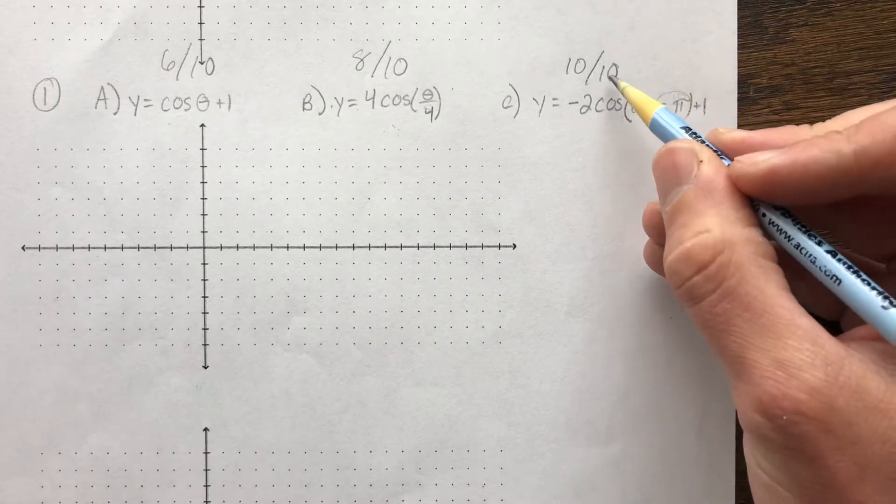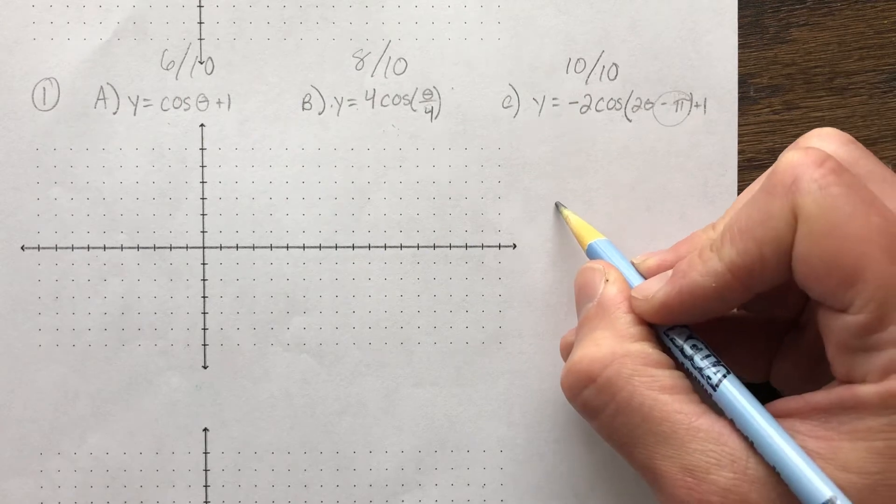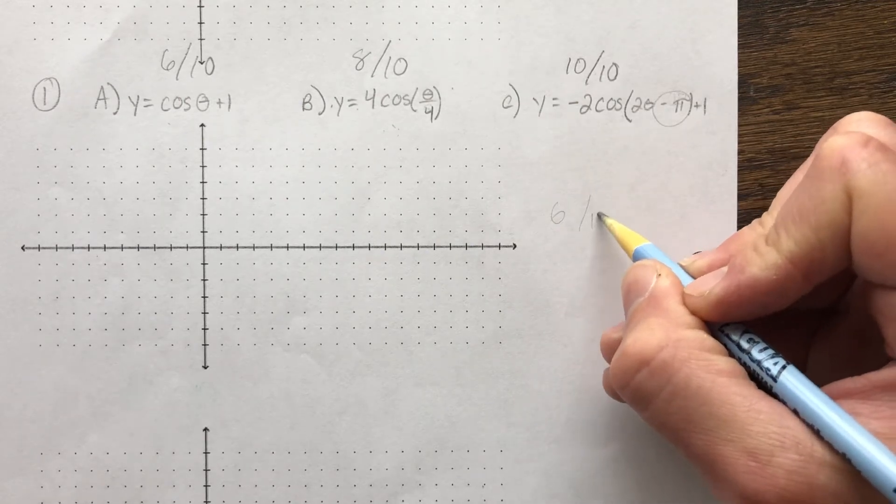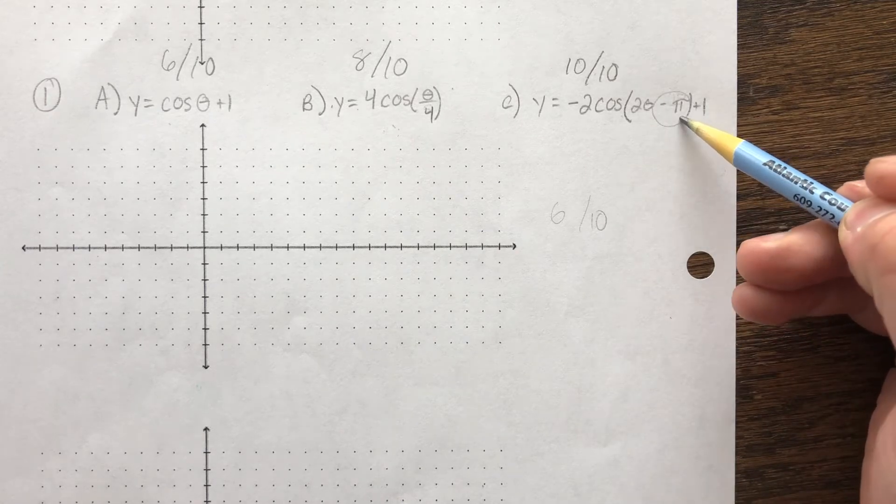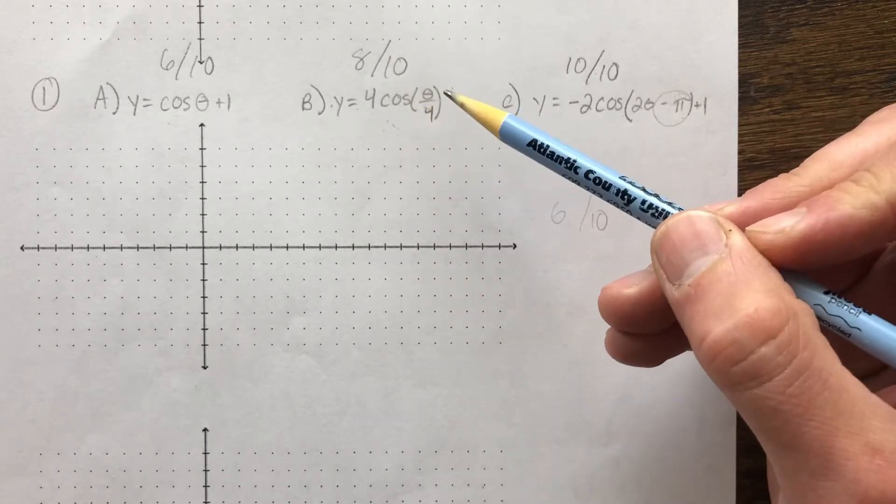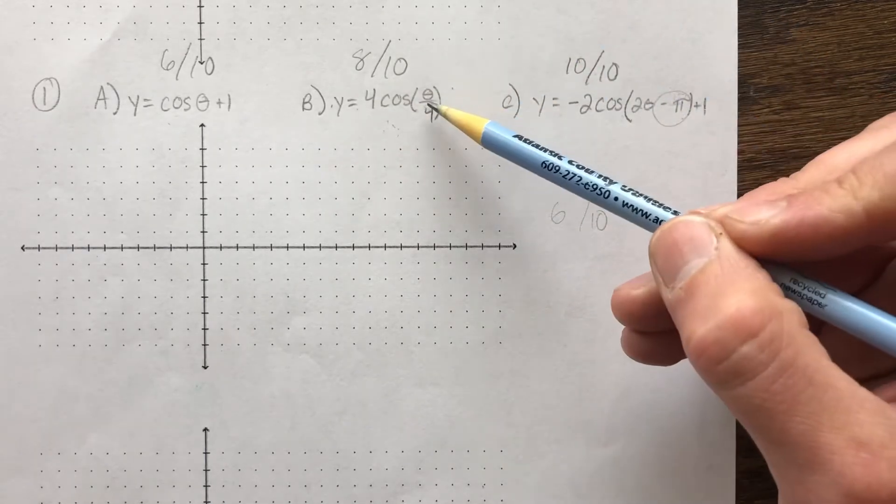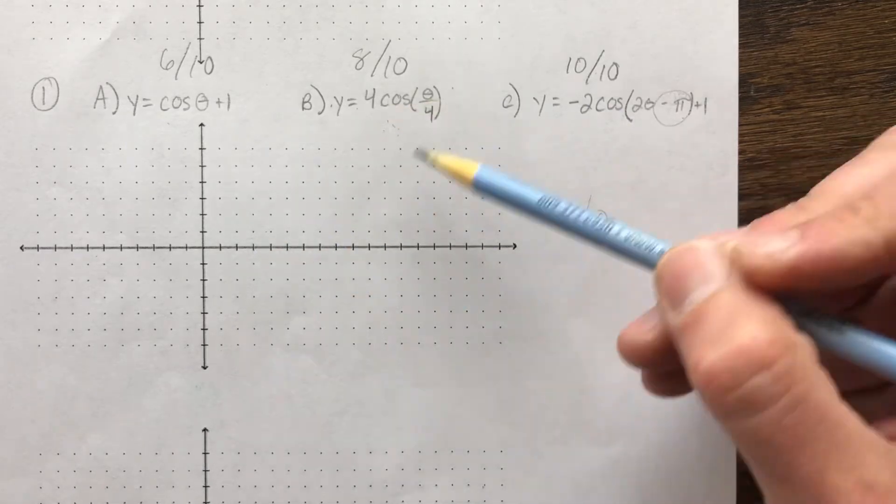only get six points out of ten if it's worth ten points and your graph is completely wrong. So if you really struggle with phase shift, then maybe choose level B. That way it doesn't have a phase shift, and you can probably get the whole thing right and get eight points.